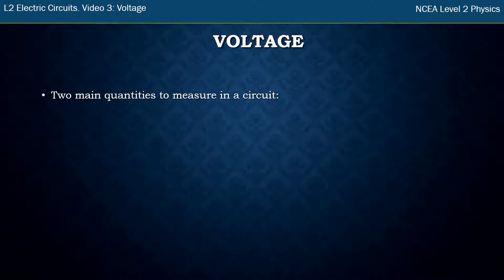So in a circuit, there's two main quantities that we can make measurements of and those are called voltage and current. So this is the video on voltage and the next video will be about current.